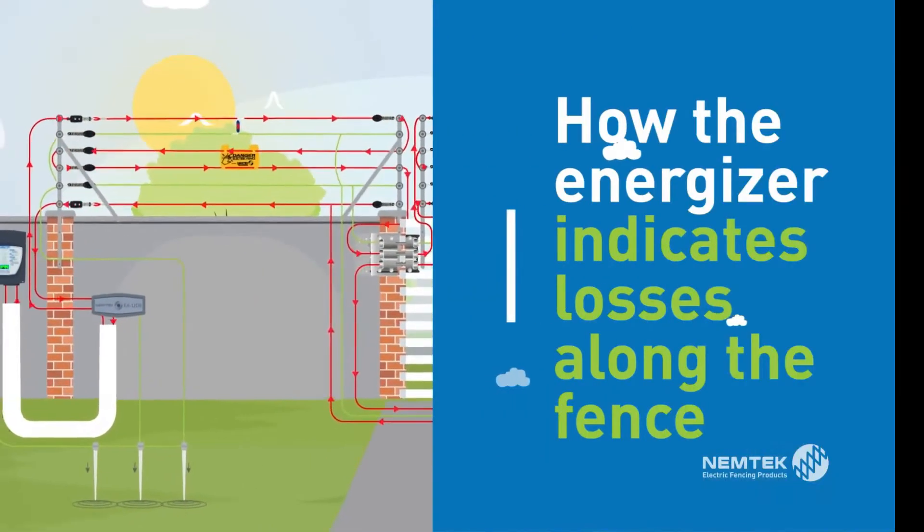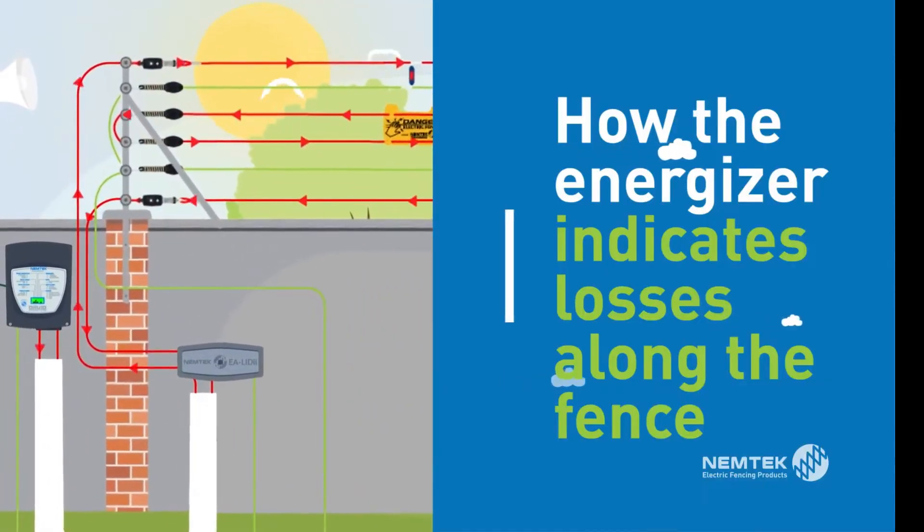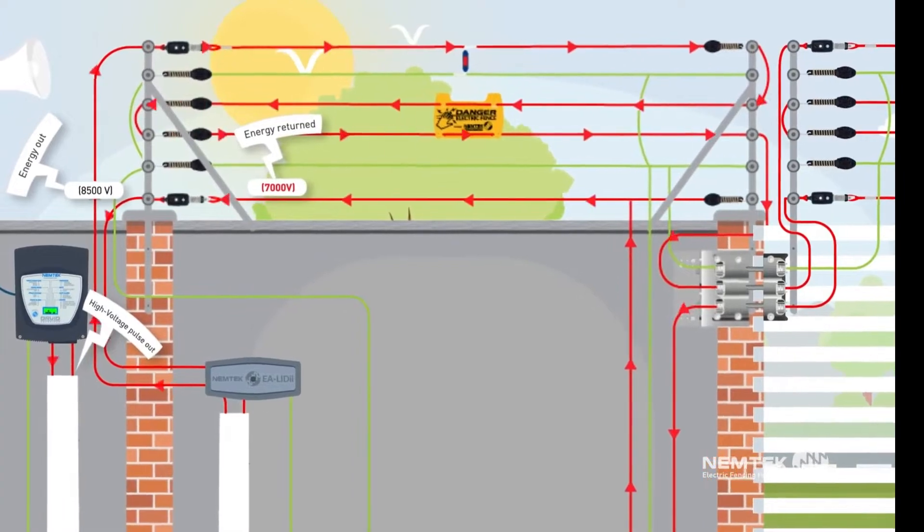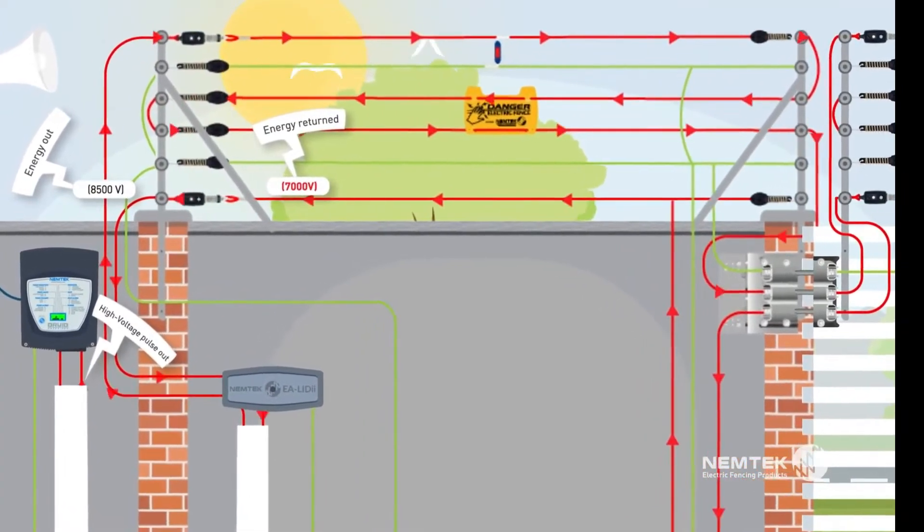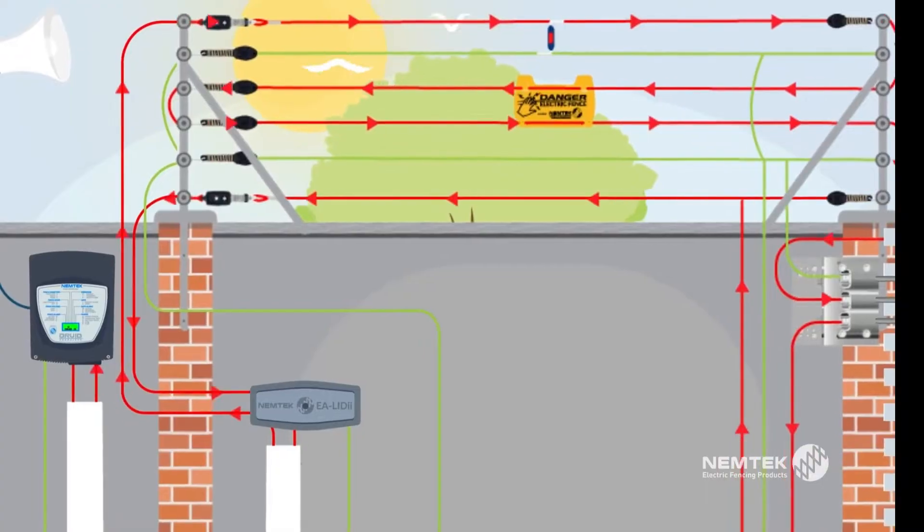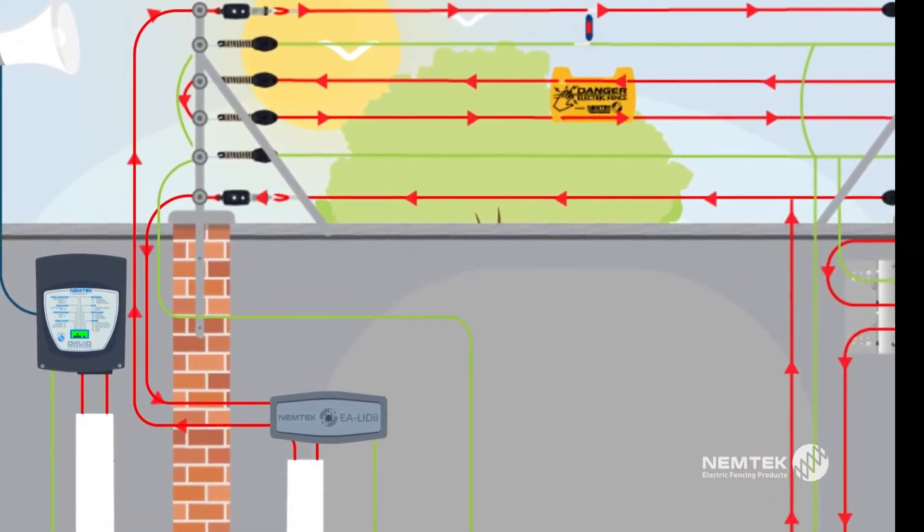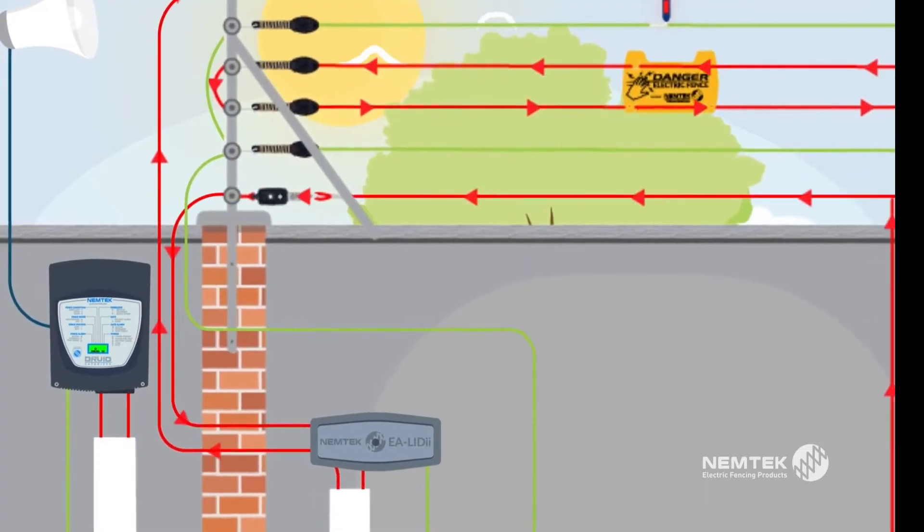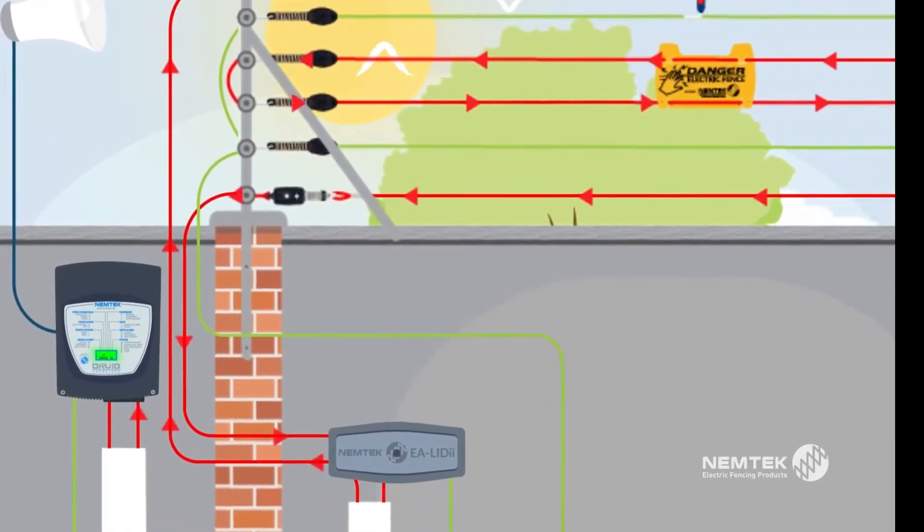How the energizer indicates losses along the fence. The energizer monitors the losses over the length of the fence and determines if they are within acceptable parameters. If the amount of high voltage pulse returning is acceptable, indicating the fence is clear, the energizer display will remain green and not go into alarm.